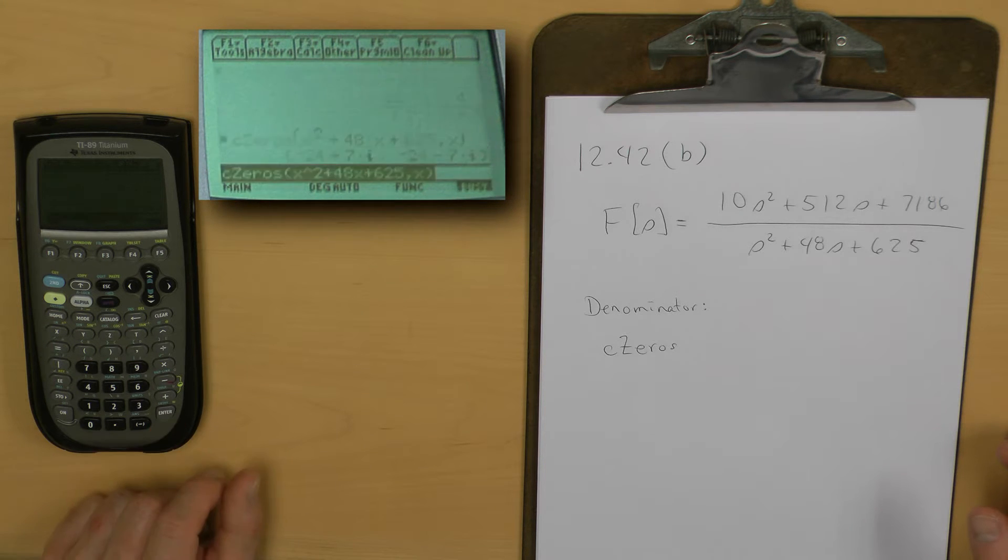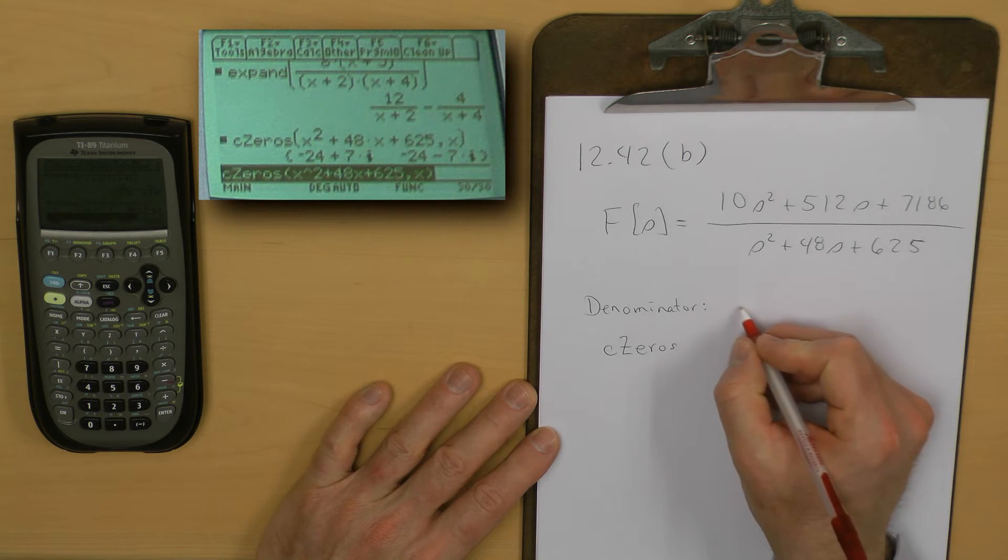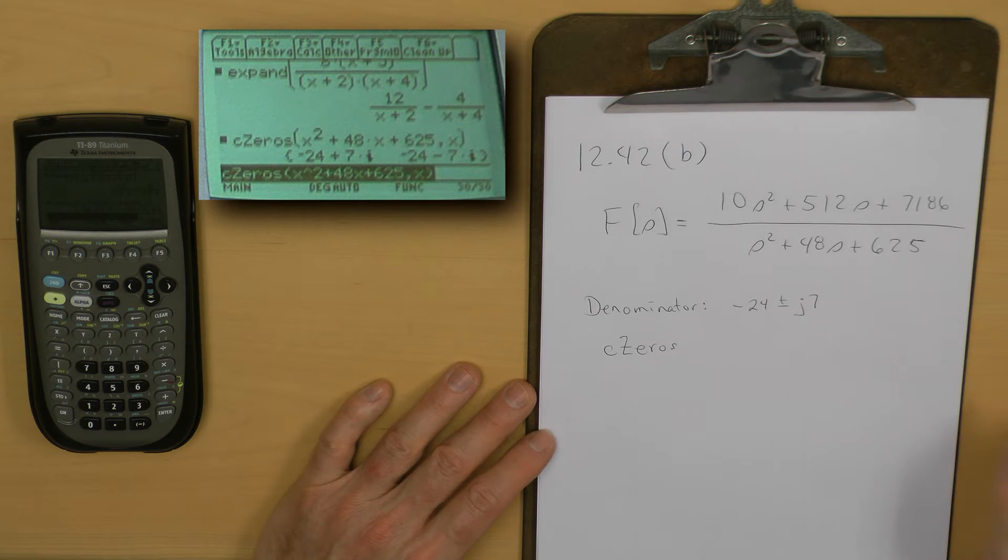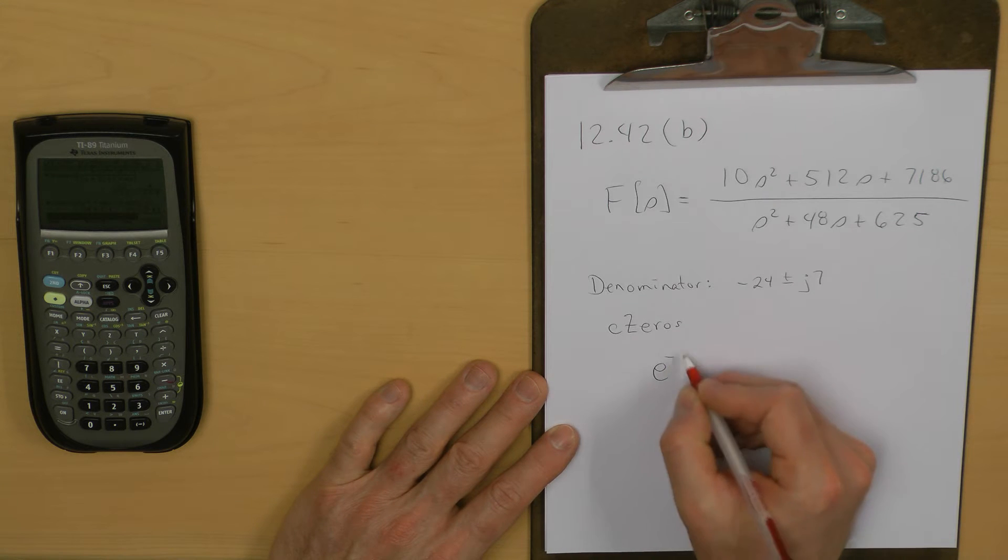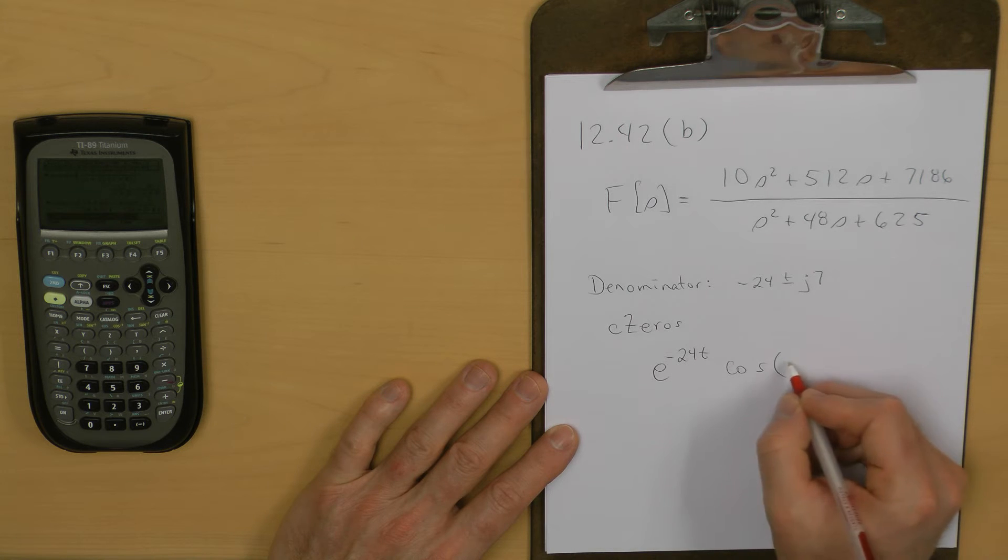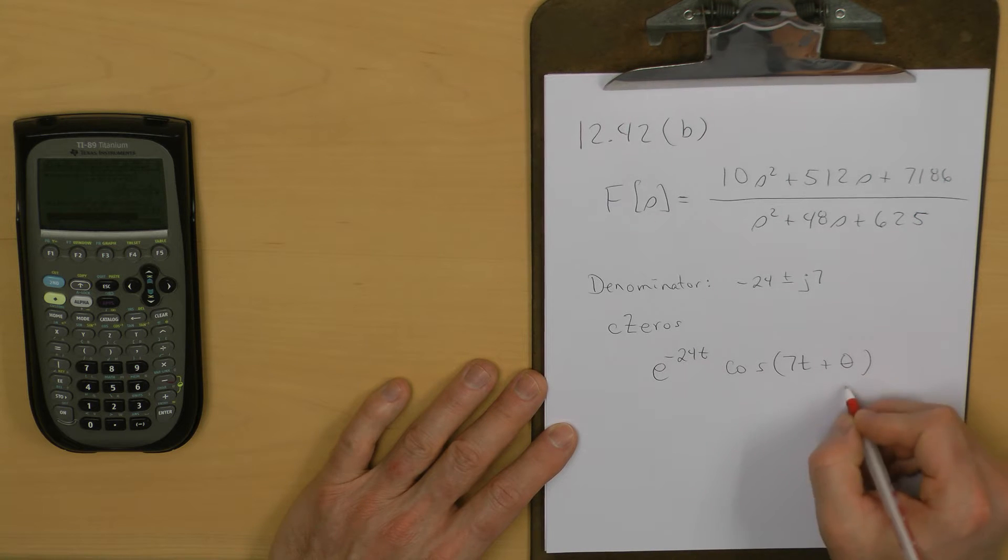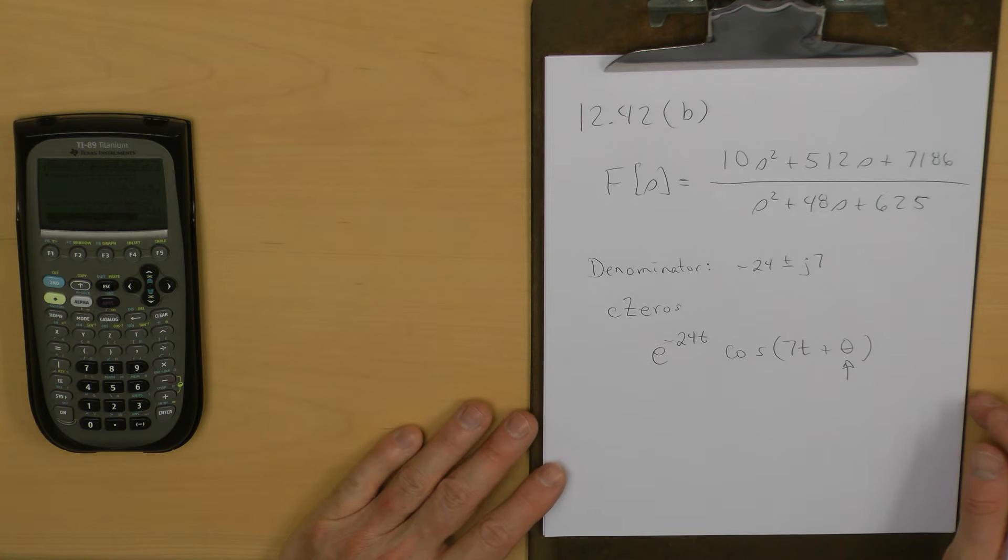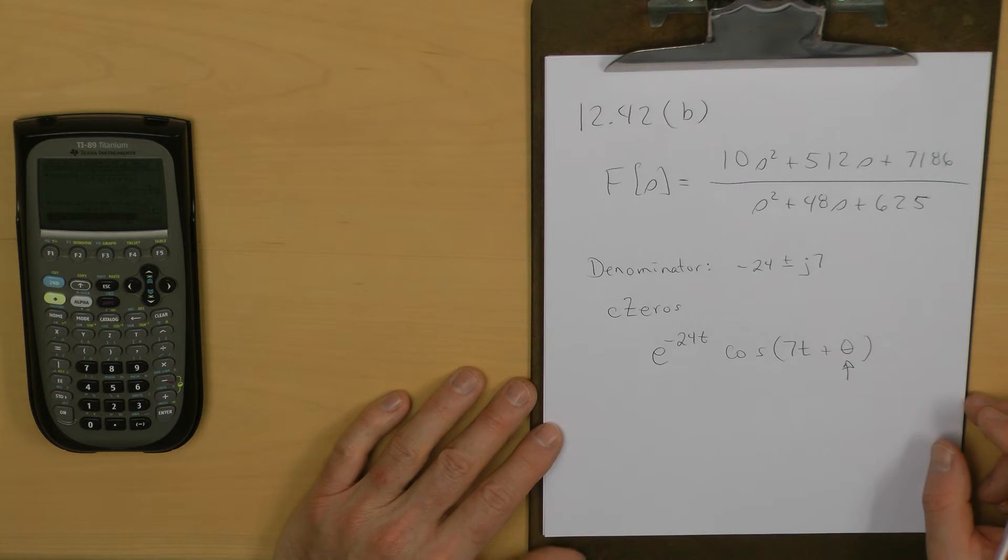Now I can hit enter, and my denominator polynomial actually has roots at minus 24 plus and minus J7. Now we know that our answer is going to look like e to the minus 24t with a cosine at a frequency of 7 for the damped frequency. What we don't know yet is this particular angle, and we'll identify that after we get the partial fraction expansion coefficients.